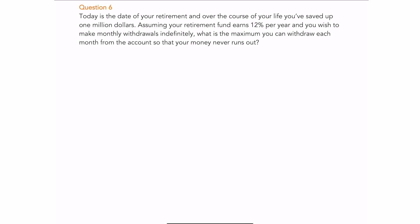Question number six: today is your retirement date and you've saved $1,000,000. Your retirement fund earns 12% per year and you wish to make monthly withdrawals indefinitely. What is the maximum you can withdraw each month so your money never runs out? This is an ordinary perpetuity where we're solving for the payment.